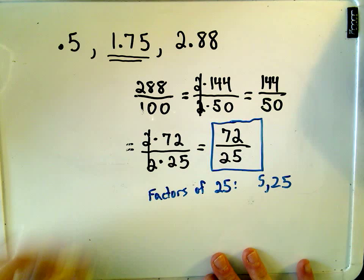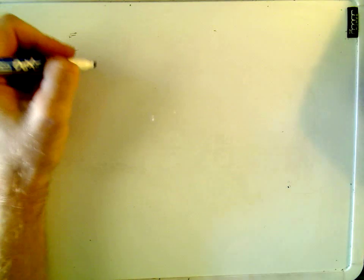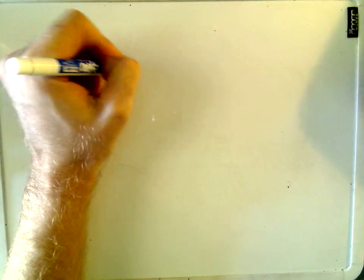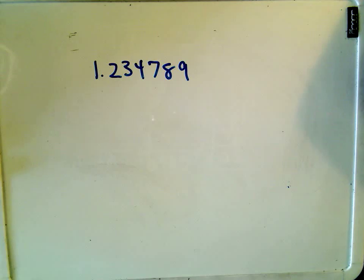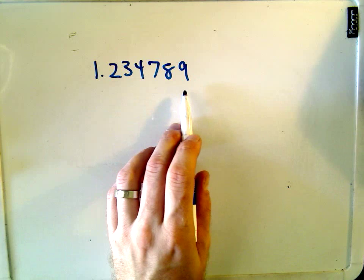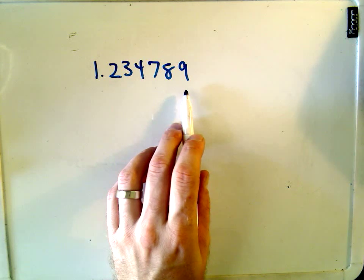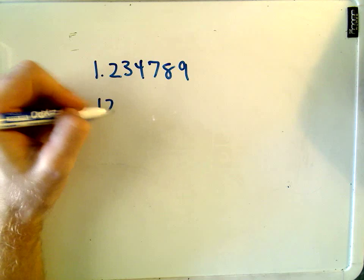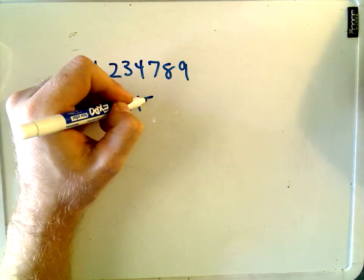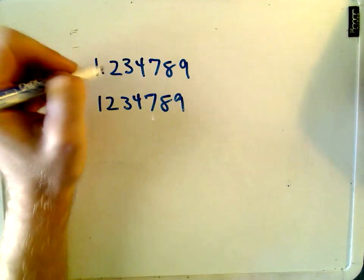So, I hope these examples make some sense. Like I said, I'm not going to do this one out, but if somebody gave you a big number, it's going to be a little tedious to simplify it. Because you're going to get 1234789. What did we do?